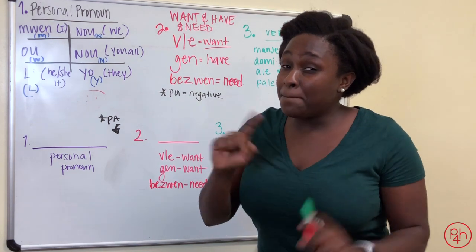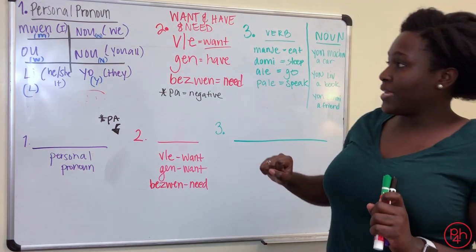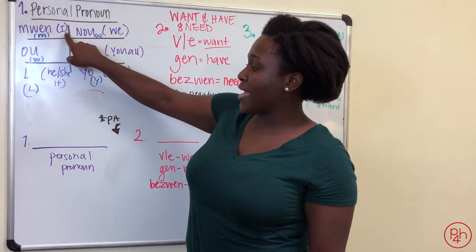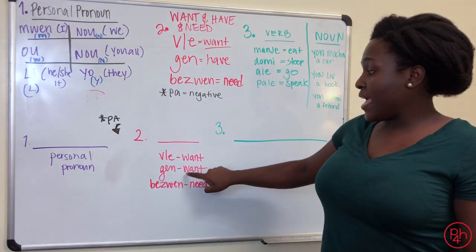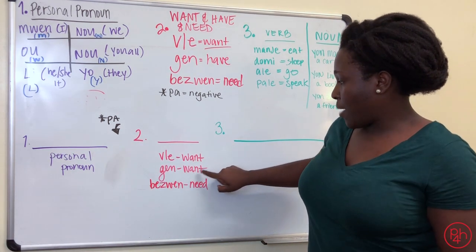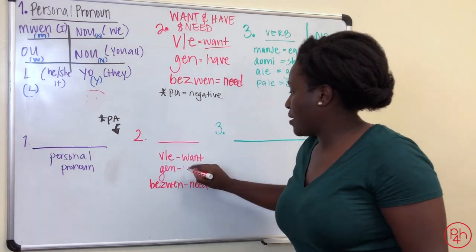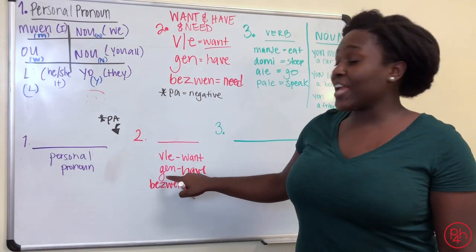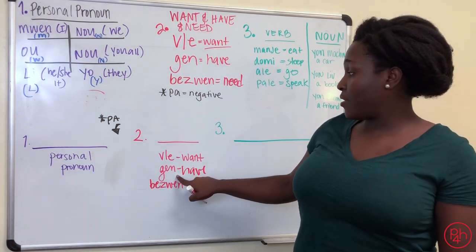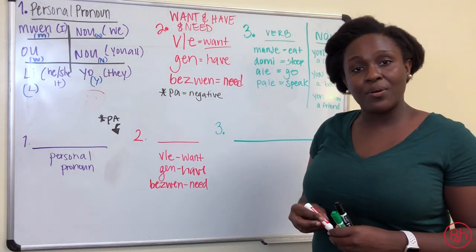I could say, Mwen pa gen yon machin. Mwen pa gen yon machin. I don't have a car.